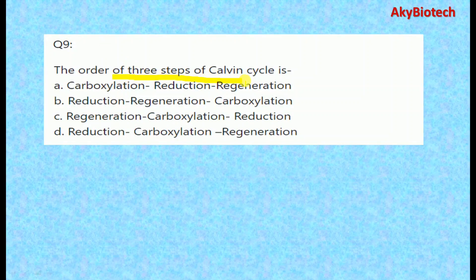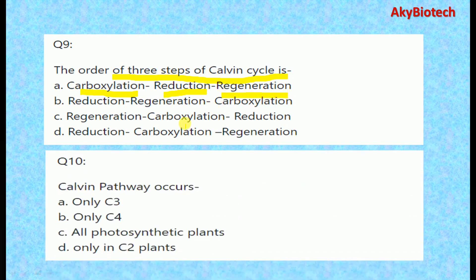Question nine: The correct order of the three steps of the Calvin cycle is carboxylation, followed by reduction, and then regeneration as the last step. Question ten: The Calvin pathway occurs in all photosynthetic plants.